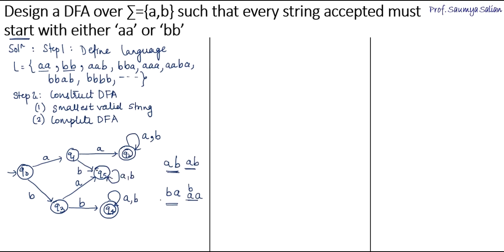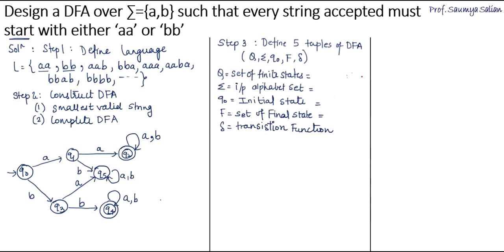This is how we construct the DFA for strings starting with either AA or BB. The next step is to define the five tuples of the DFA. A DFA is defined by five tuples: Q, Σ, q0, F, and δ. Q is the set of finite states: {q0, q1, q2, q3, q4, q5}. The input alphabet Σ is {A, B}.